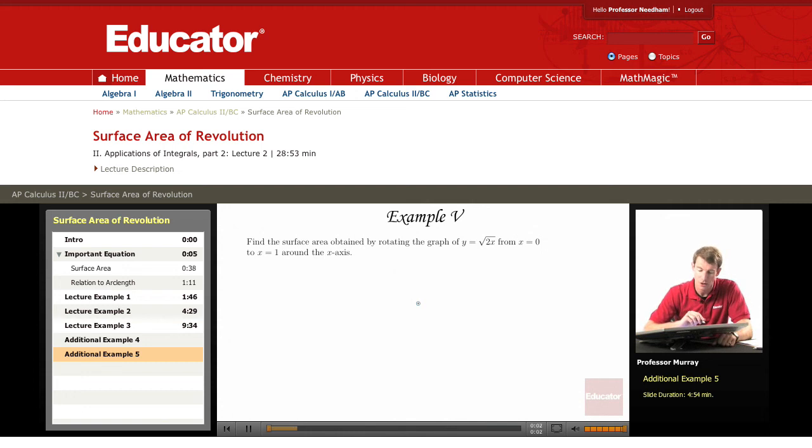For our last example, I'd like to find the surface area obtained by rotating the graph of y equals the square root of 2x around the x-axis.